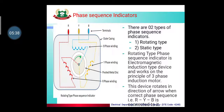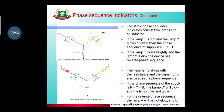If R-Y-B is the correct phase sequence, the metal disc rotates clockwise in the direction of the arrow. If the phase sequence is not correct — that is, R-Y-B is not in the right order — the plate rotates in the reverse direction of the arrow.